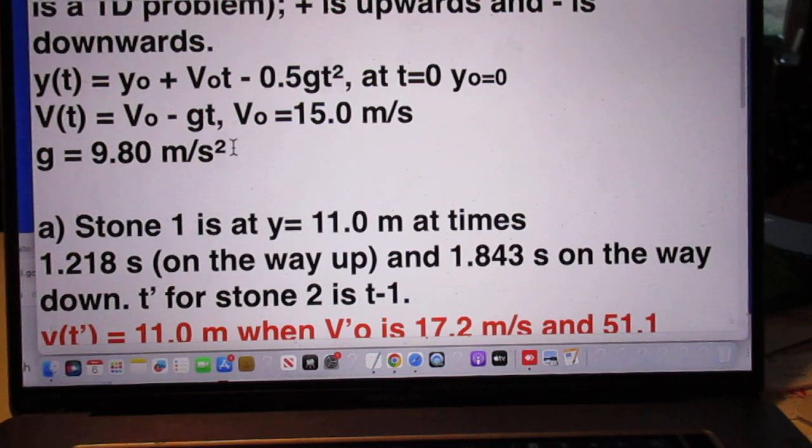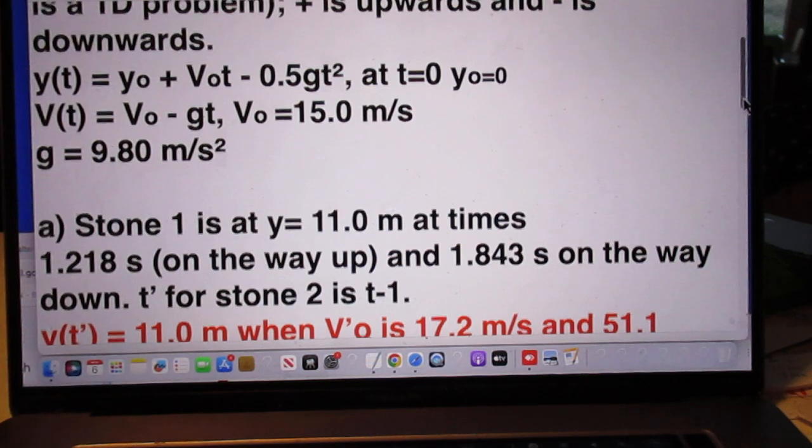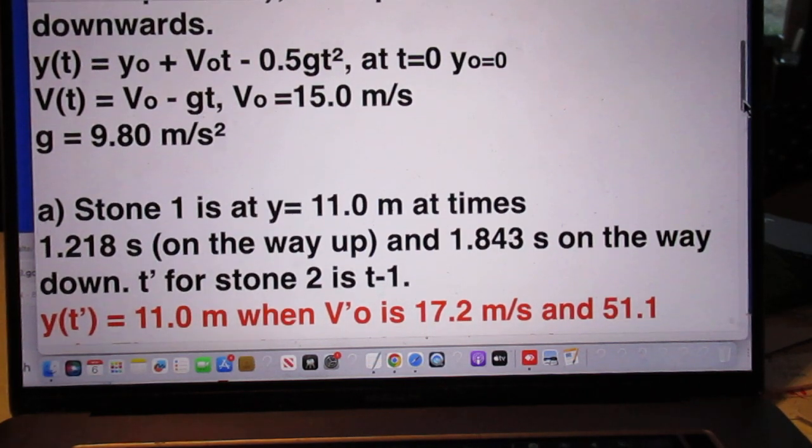I have chosen g to be 9.80 meters per second squared, but I will also give the solutions for 10 meters per second squared because some of you use 10. But my first solutions are for 9.8.